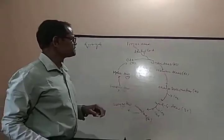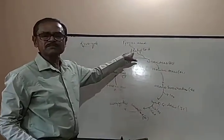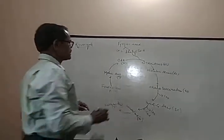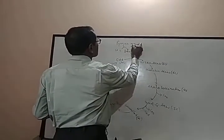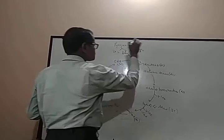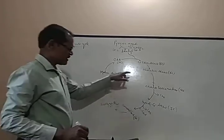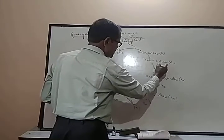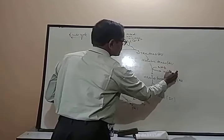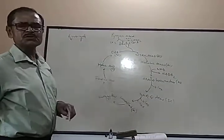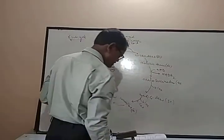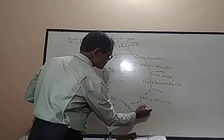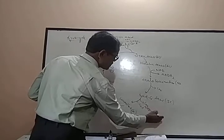During this process, what happened? When pyruvic acid converts into acetyl coenzyme A, at that time it liberates CO2 and NAD converts into NADH2. Again, isocitric acid when converts into oxalosuccinic acid, at that time NAD also converts into NADH2. Similarly, during the process of alpha-ketoglutaric to succinic acid, there also NAD converts into NADH2.